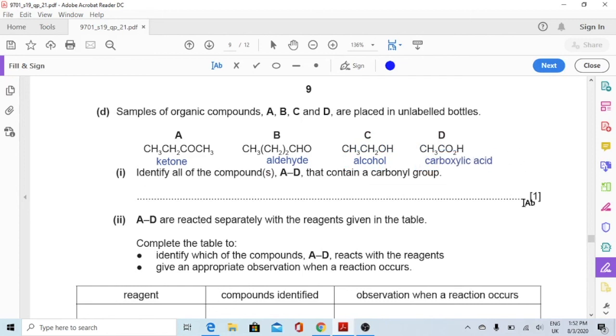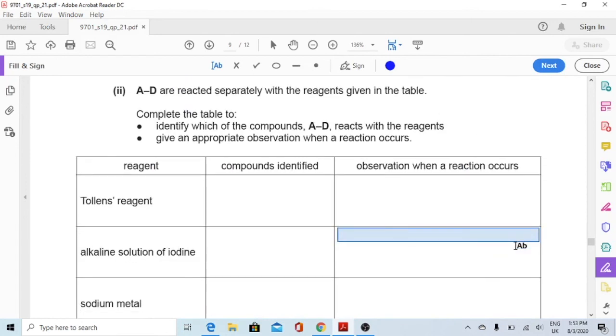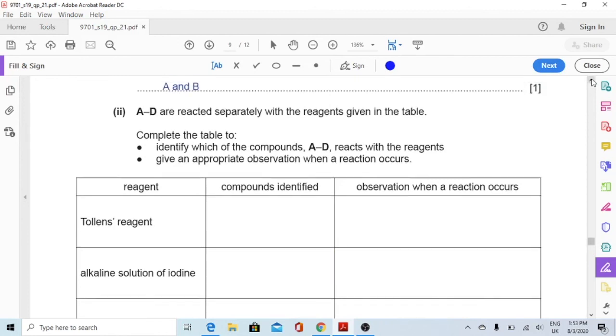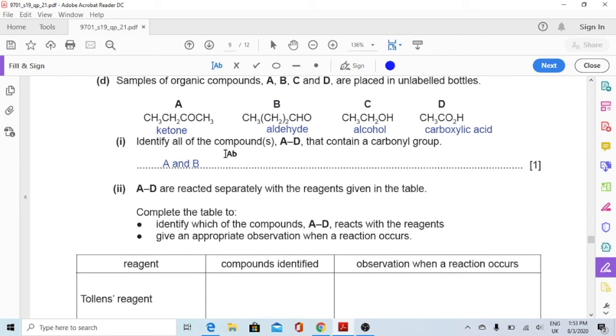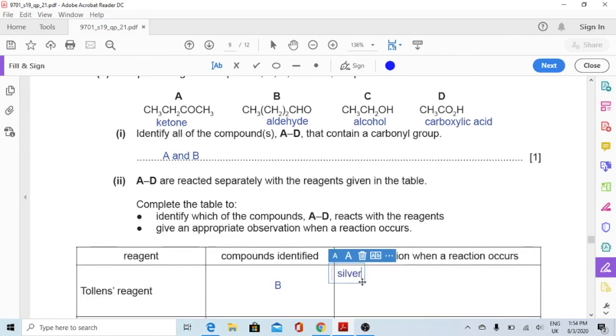Part 1, identify all of the compounds A to D that contain a carbonyl group. A carbonyl group is either a CHO which means it's either an aldehyde or a ketone, so A and B. Now part 2, A to D are reacted separately with the reagents given in the table. Complete the table to identify which of the compounds reacts with the reagents. With Tollen's reagent, which one would react? Tollen's reagent will identify whether a sample has an aldehyde or not. So only an aldehyde will react with Tollen's reagent. So compounds identified is B only. And the observation will be a silver precipitate will form.